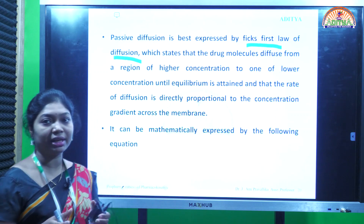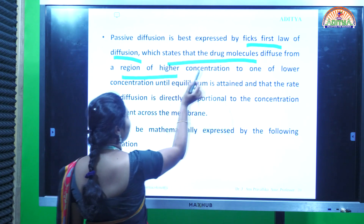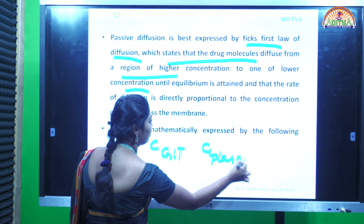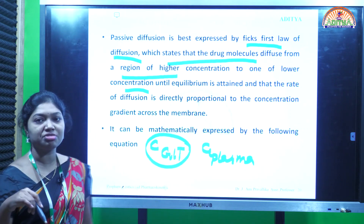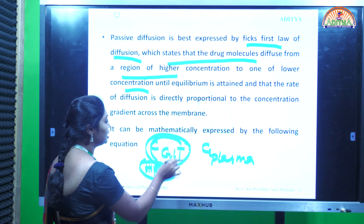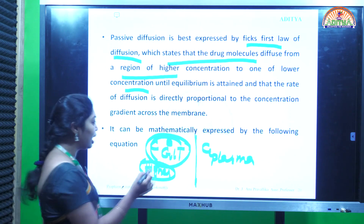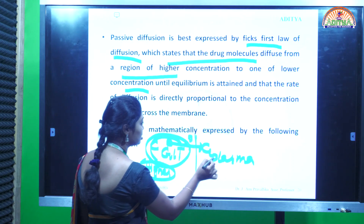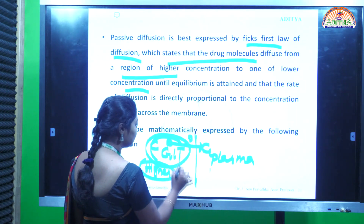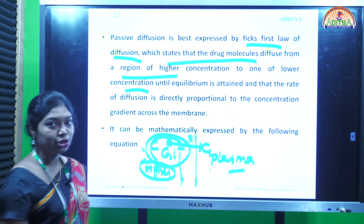Fick's First Law states that drug molecules diffuse from the region of higher concentration to the region of lower concentration. If you take C-GIT and C-plasma, C-GIT is having a higher concentration because after administration, the total 100% of the drug first reaches the GIT. There is a barrier - the membrane - and the drug molecules cross it, reaching the plasma, which has lower concentration. So the movement is from higher concentration in GIT to lower concentration in plasma.